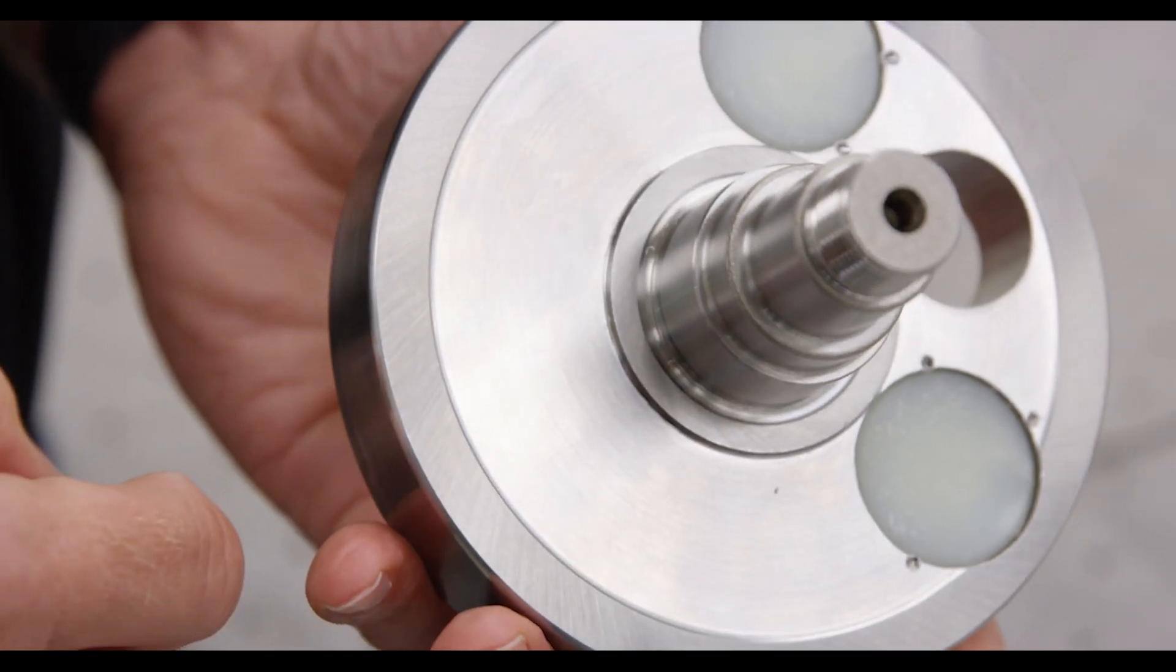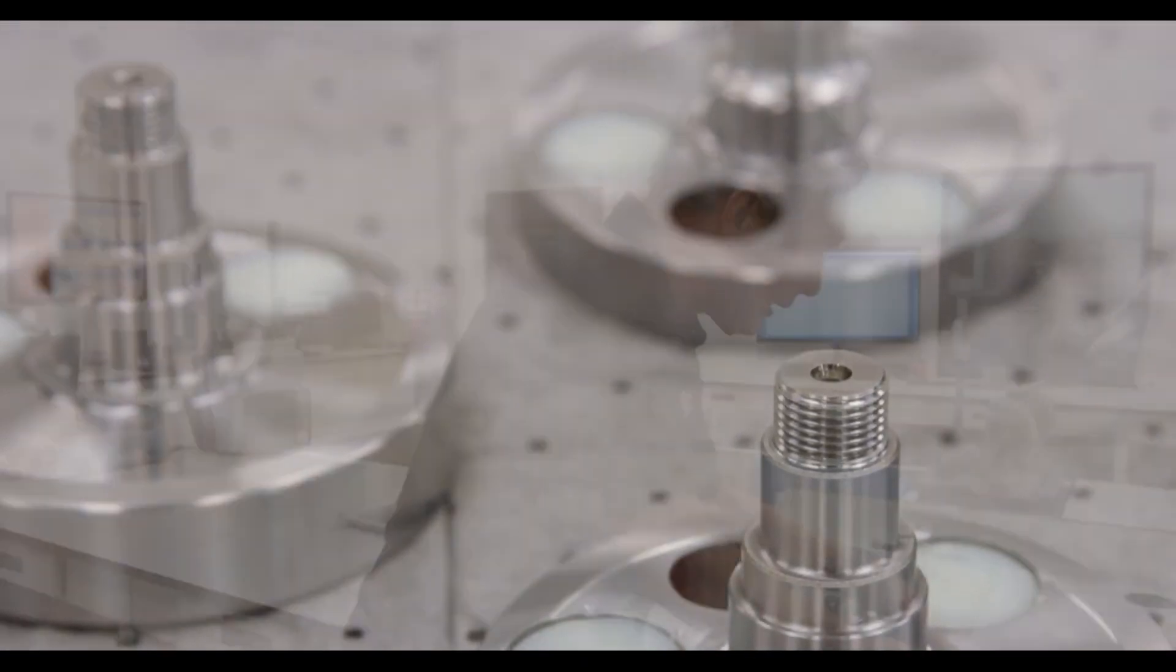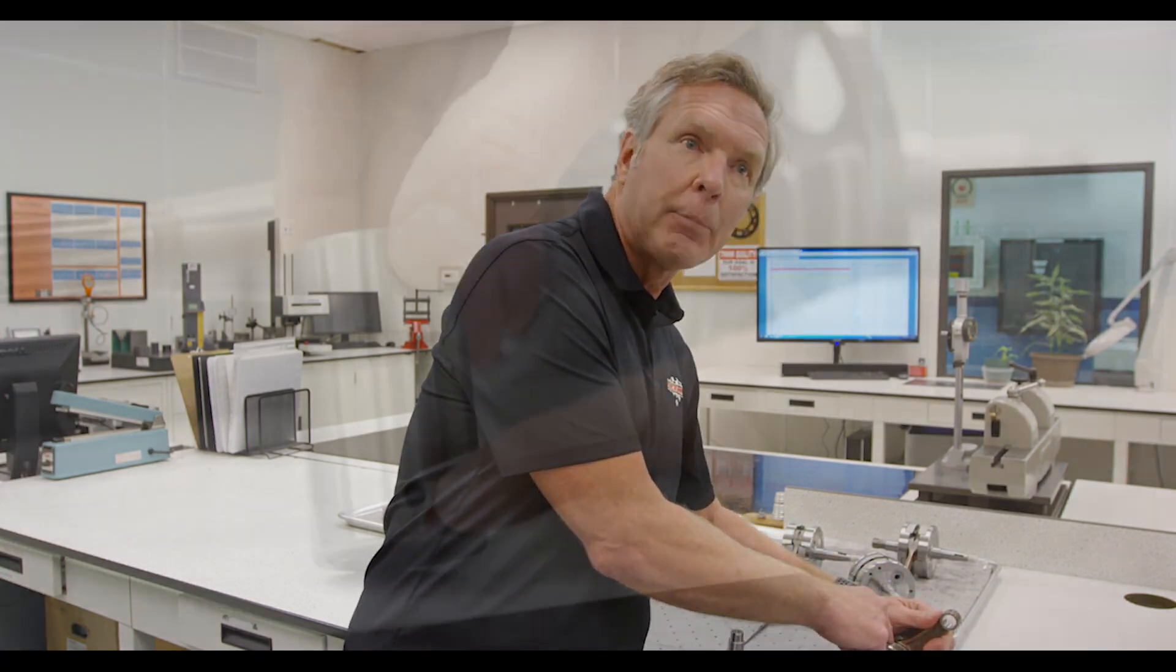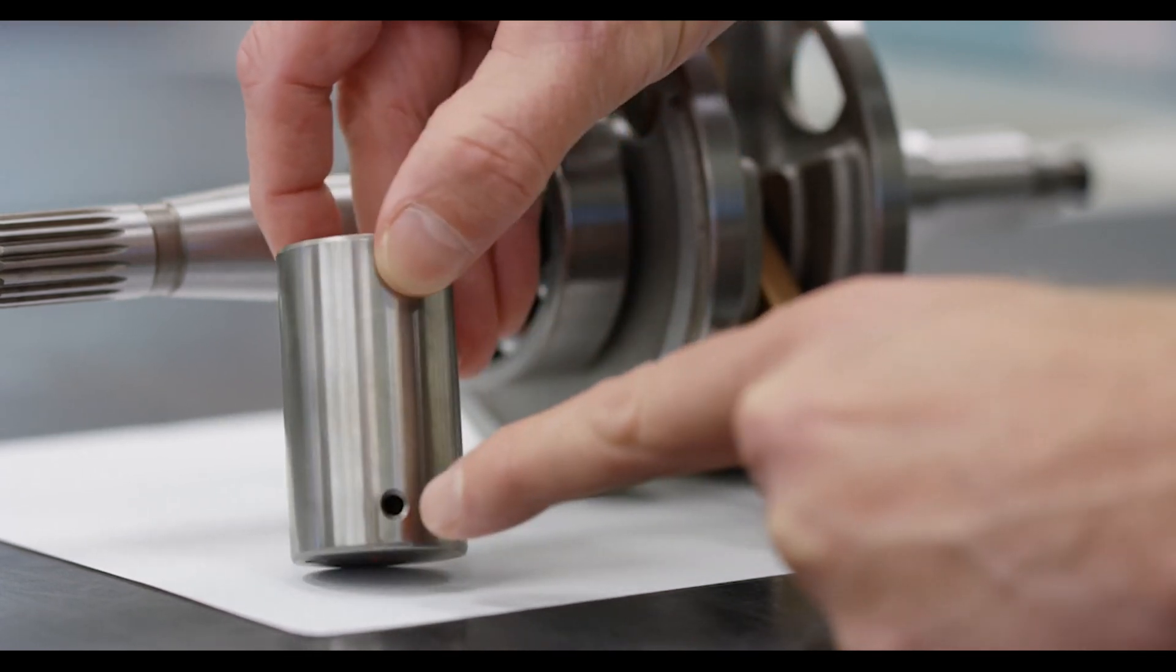There's a host of things that we're doing when we disassemble, including looking at the cleanliness in the big end area around the bearings and the crank pin itself. We're checking the oil passageways to make sure there's good oil flow.